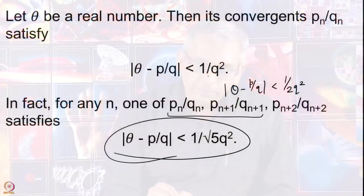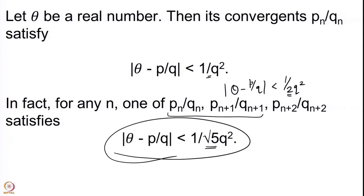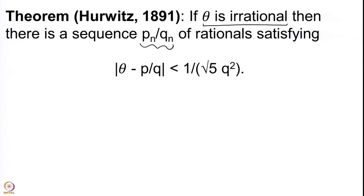Here the coefficient (the multiple of Q) was 1, then we improved it to 2, and then we improved it to √5. This gave us a proof of Hurwitz's theorem, proved in 1891. The theorem says that if you have an irrational number theta, then there is a sequence of rationals converging to theta satisfying this particular inequality.